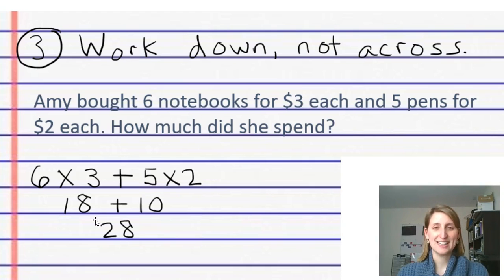One easy way to help kids get in this habit is to simply take their notebook pages and fold them in half, then all of a sudden they have two columns. So they can work down one column, then go back up to the other column and work down that column.